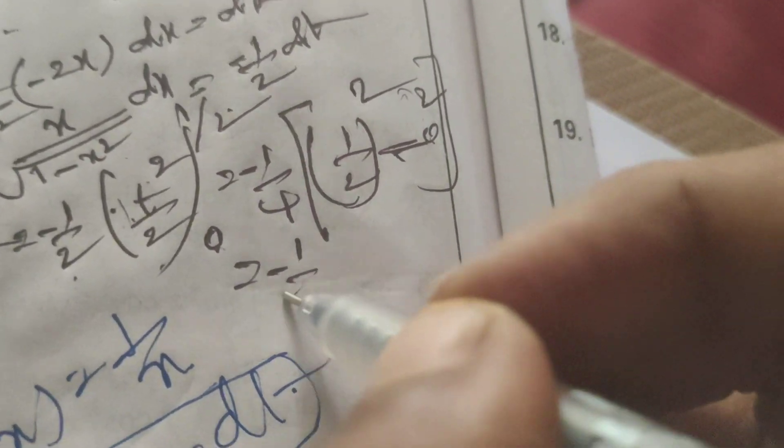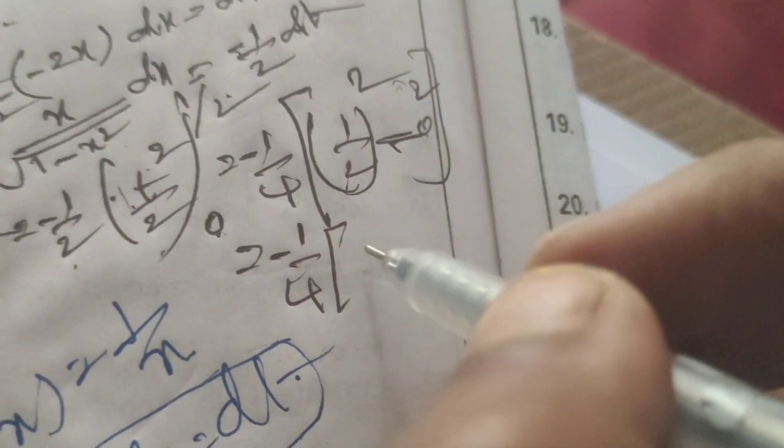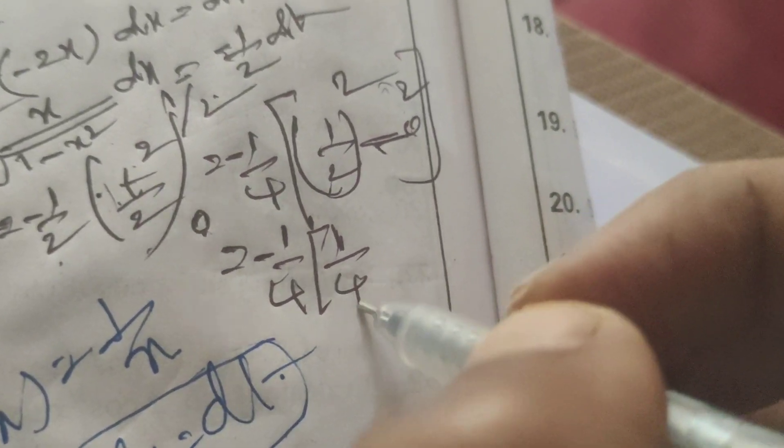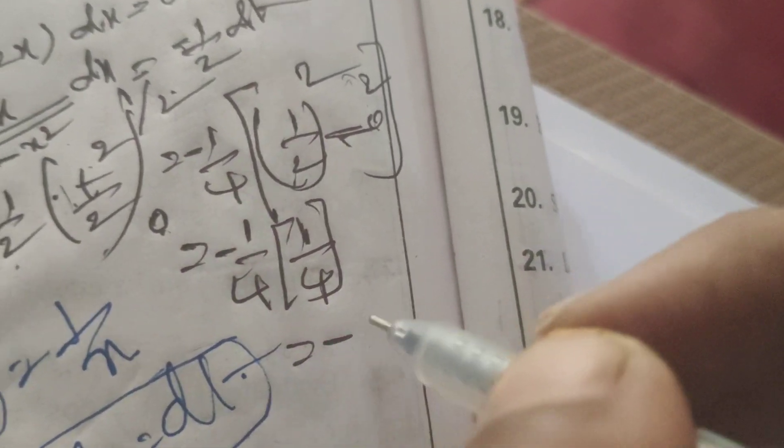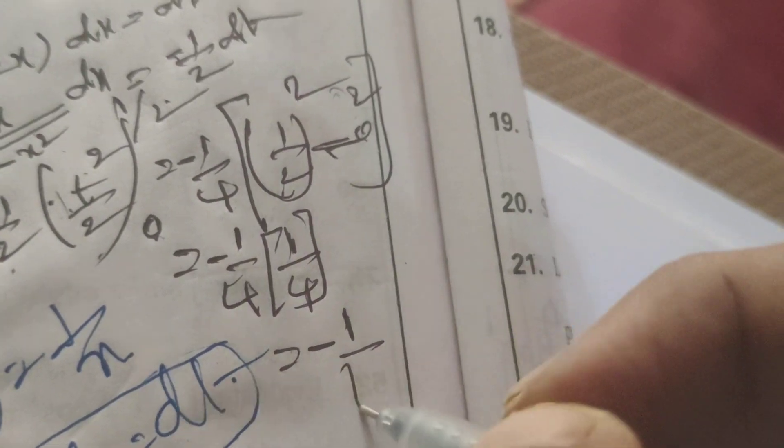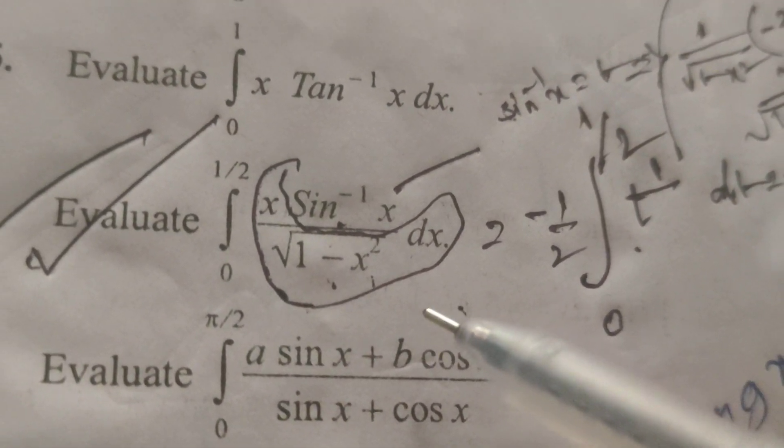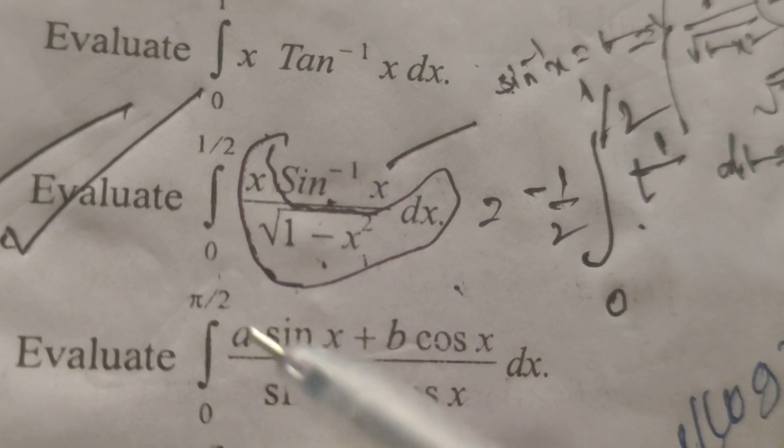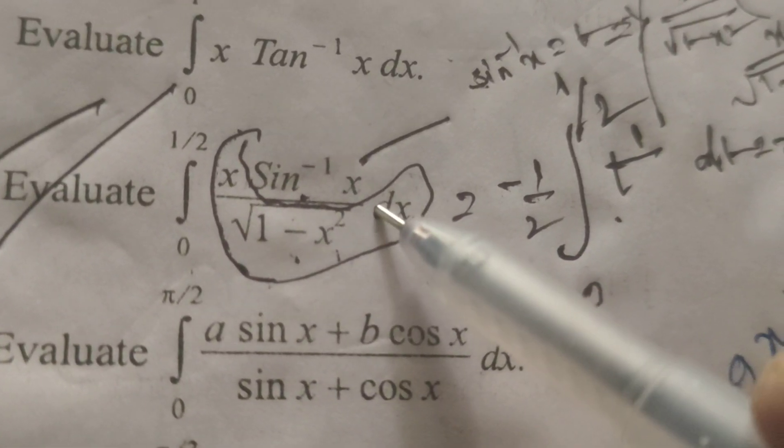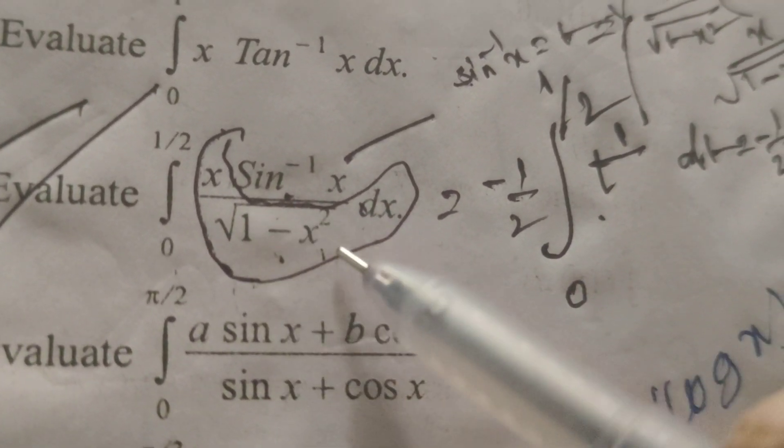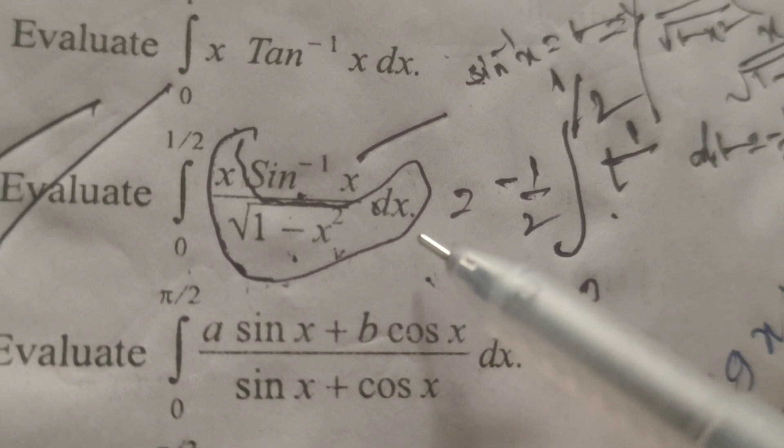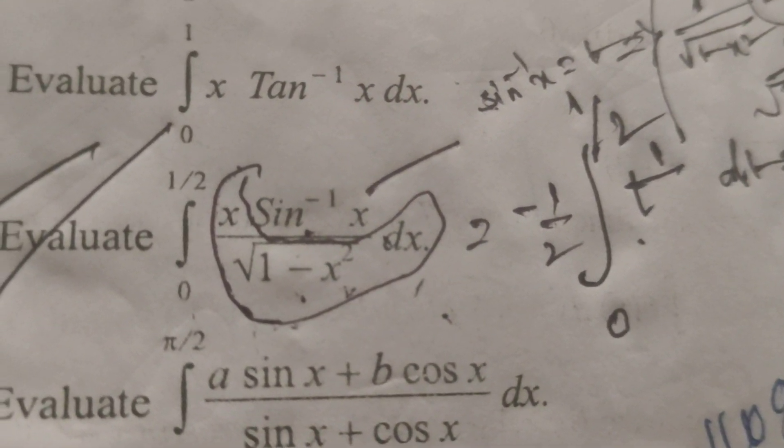So, minus 1 by 4 into 1 by 2 whole square, that is 1 by 4, equals minus 1 by 16. This is the solution to this evaluated definite integral problem: integral 0 to 1/2 of x sin inverse x by root of 1 minus x square dx. Thank you.